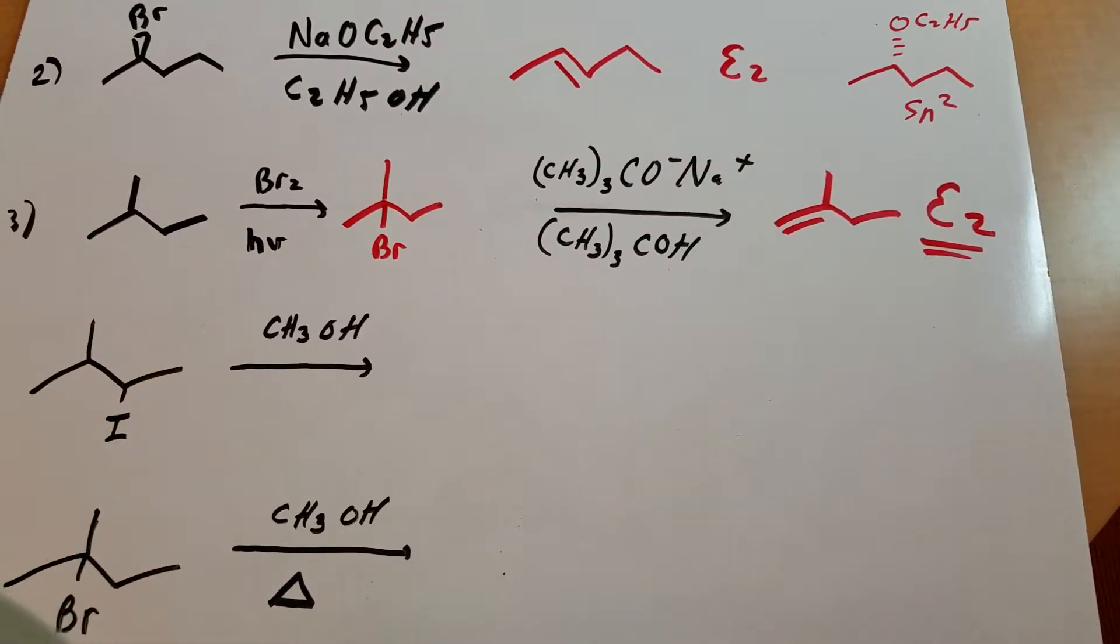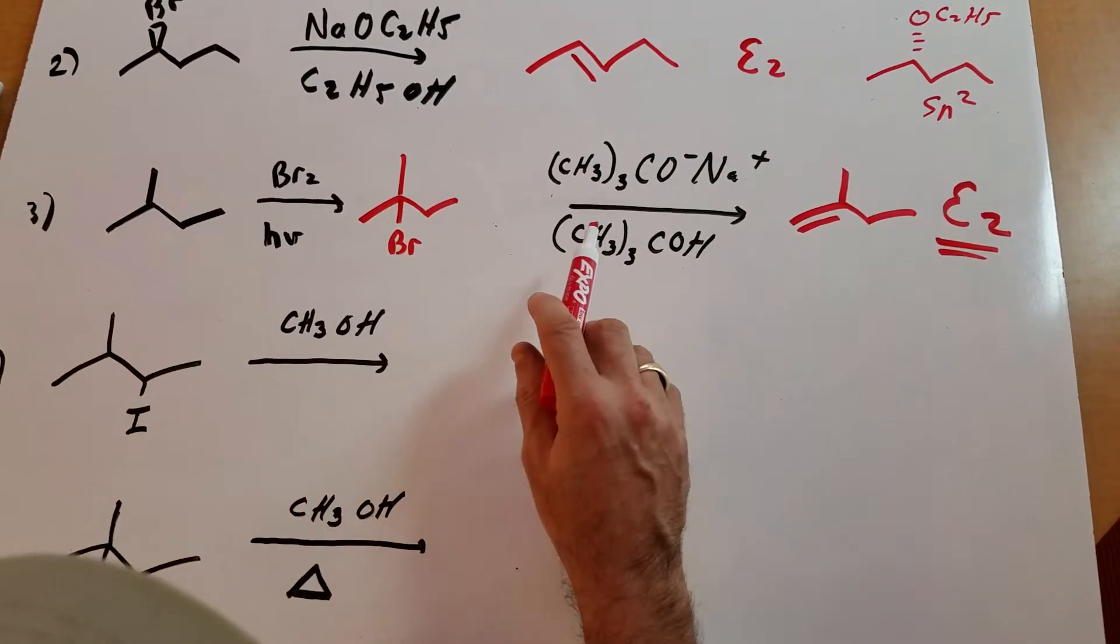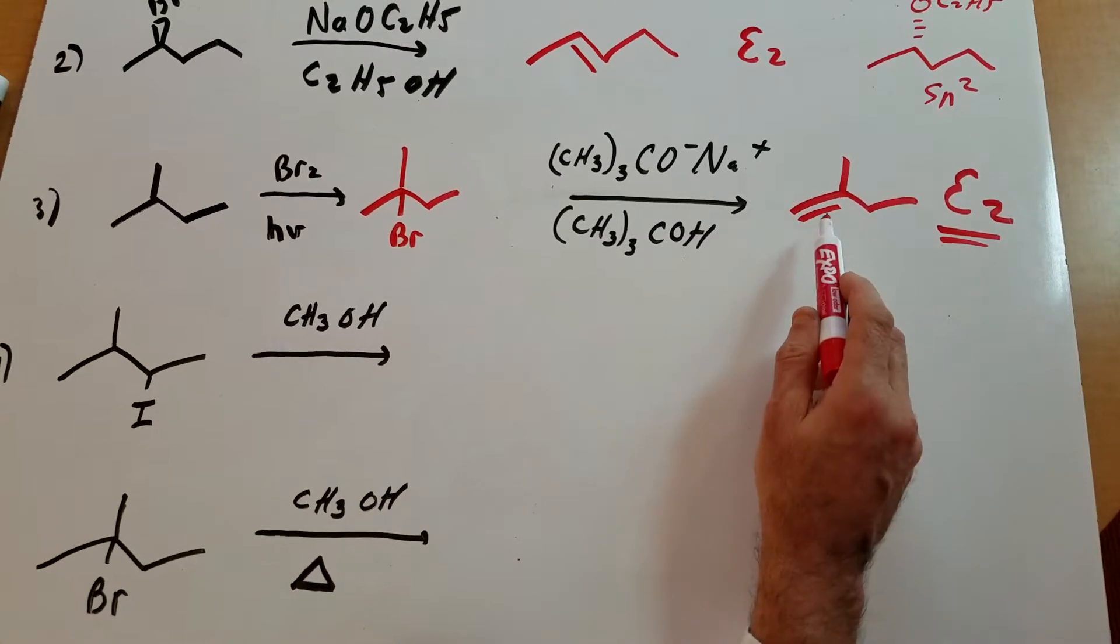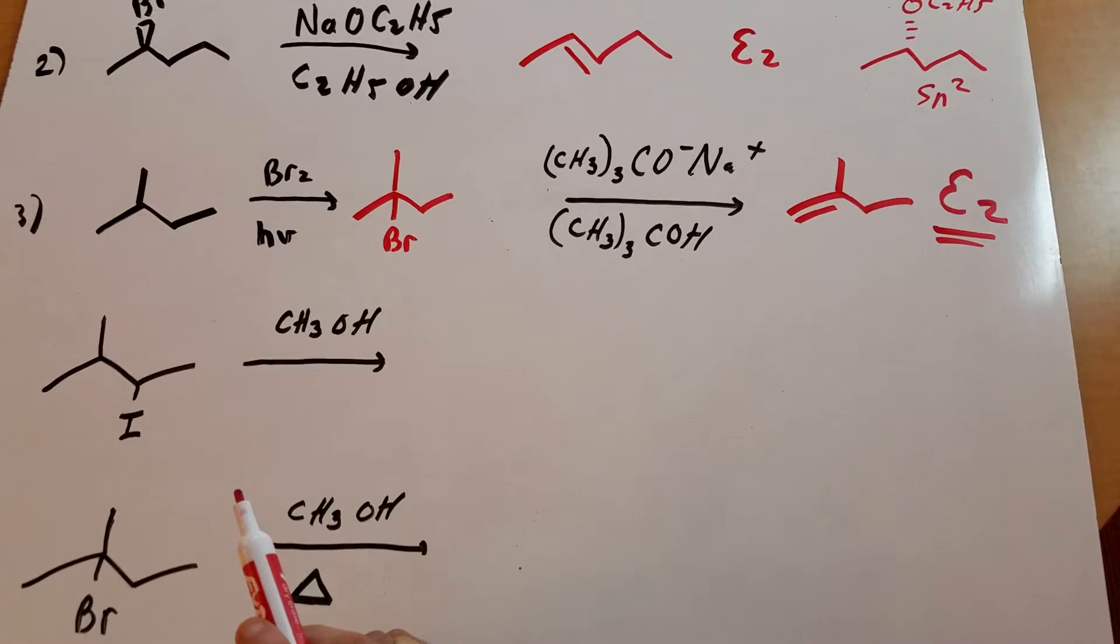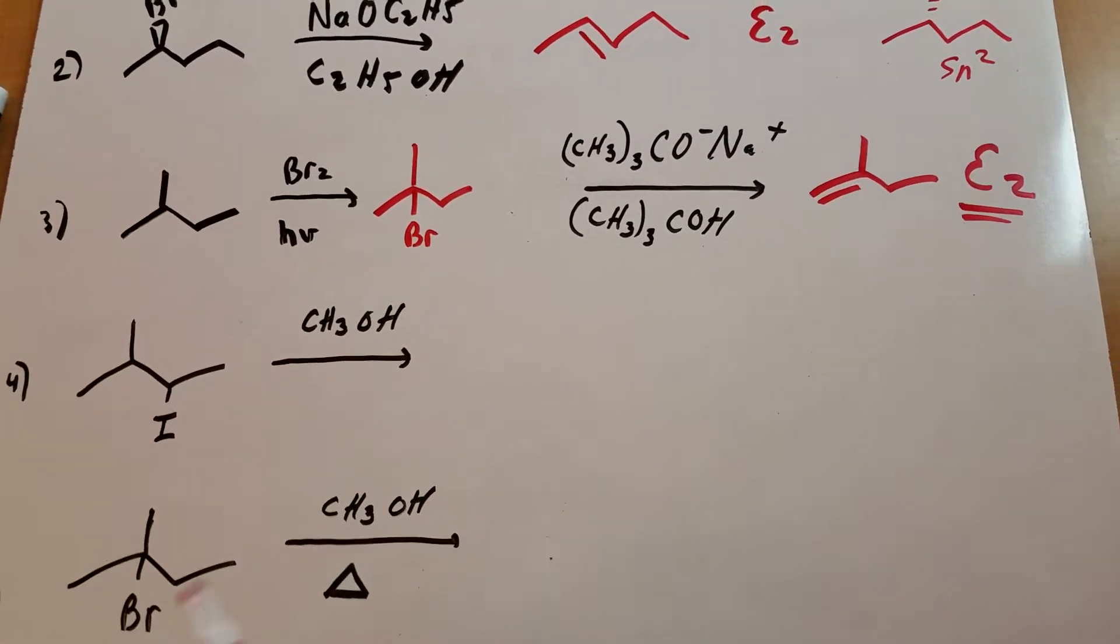So I first did a radical substitution and then I followed it by an E2, but I abstracted a hydrogen from the very end—the most accessible hydrogen—and we call this the Hoffman product.